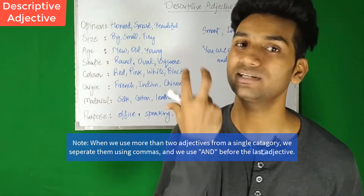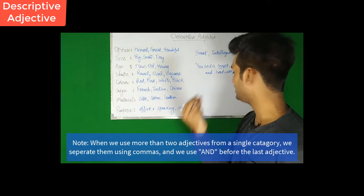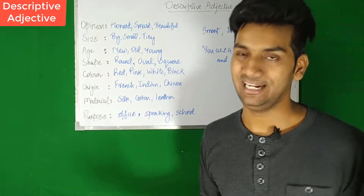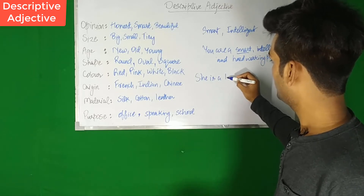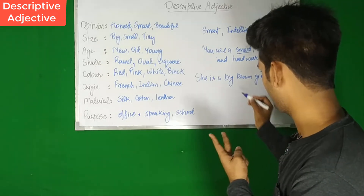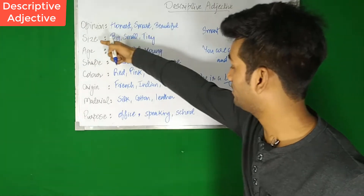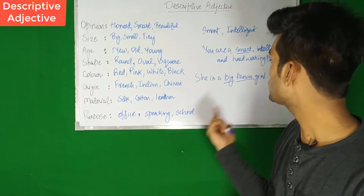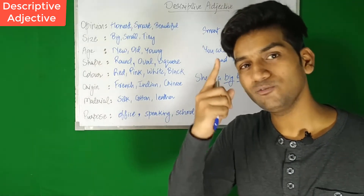But when you use two adjectives or more from different categories, you are not supposed to use commas or 'and.' For example, 'She is a big brown girl.' I've used 'big' from the category size and 'brown' from the category color - two different categories - so I have not used 'and' to separate them. She is a big brown girl. That's how it goes.